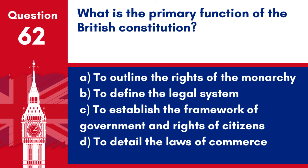Question 62. What is the primary function of the British Constitution? a. To outline the rights of the monarchy. b. To define the legal system. c. To establish the framework of government and rights of citizens. d. To detail the laws of commerce.